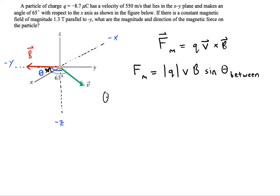And then you just want to add the 90 plus the 65. So the theta between v and B is 90 degrees plus 65 degrees, which is 155 degrees. So that's the angle to use in this problem.